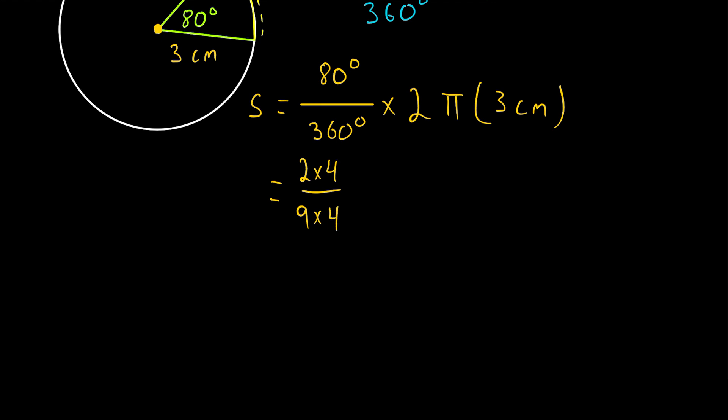Canceling out those common factors of 4, we see that we are left with 2 over 9. So that's fully reducing this fraction. Then all we have left is multiplying that by 2 pi times 3 centimeters. So this expression is telling us that our central angle cuts an arc that is 2 ninths of the total circumference.